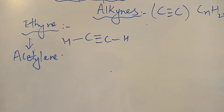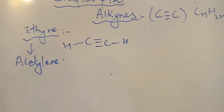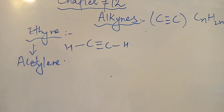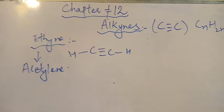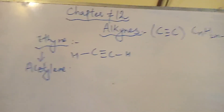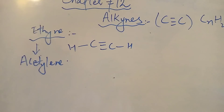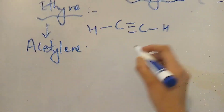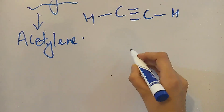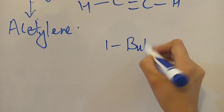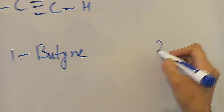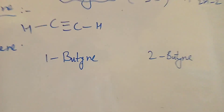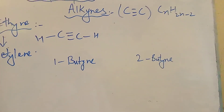So students, if you want to draw a structure of alkynes, you will draw one carbon-to-carbon triple bond. When drawing structures with one or two positions for the triple bond, there will be only one possible position of the triple bond.